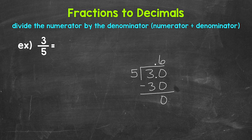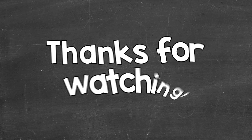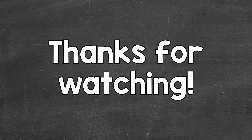3 fifths equals 6 tenths. So let's write this up: 3 fifths equals 0.6. Again, 3 fifths equals 6 tenths. So there you have it — that's how to convert 3 fifths to a decimal. I hope that helped. Thanks so much for watching.